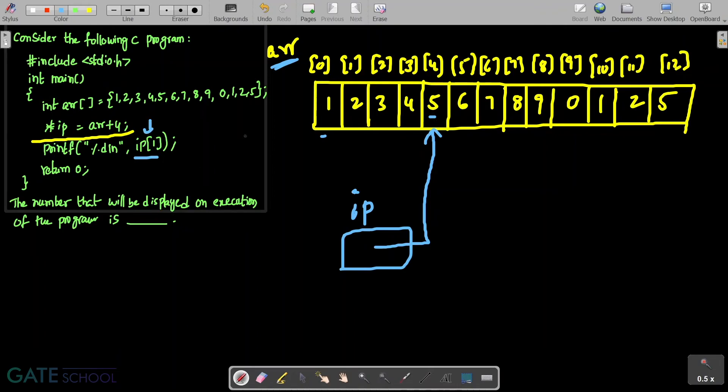IP is pointing to this memory location. From IP's point of view, this is the 0th location and this is 1. When I call IP[1] using array format, this is the corresponding location and the value inside it will be 6. This will print the value 6.